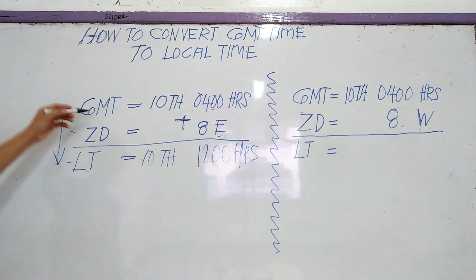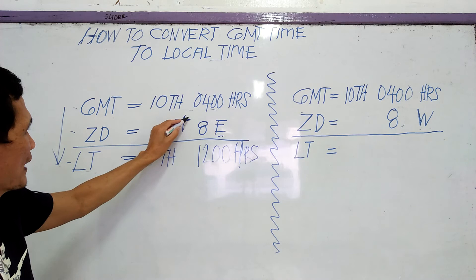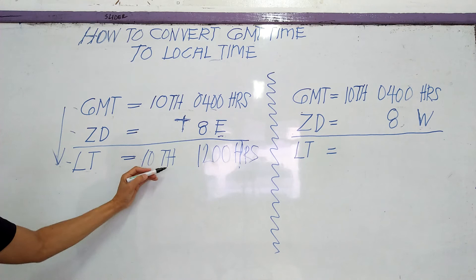From GMT to local time, east longitude is plus. So in local time, east longitude is 10th, 1200 hours.